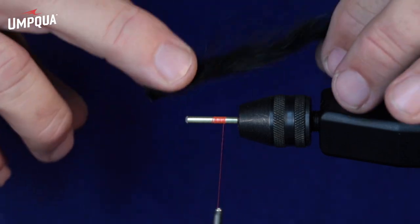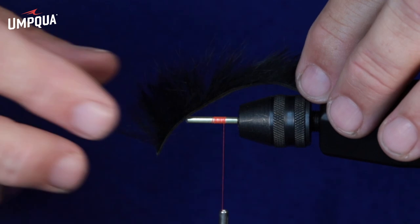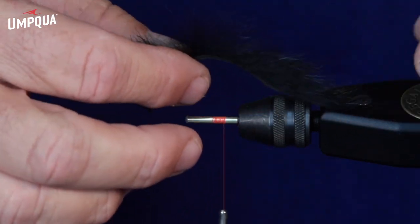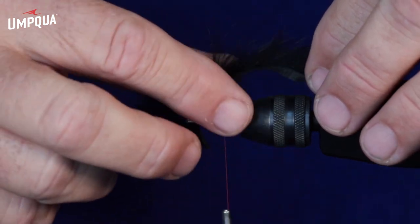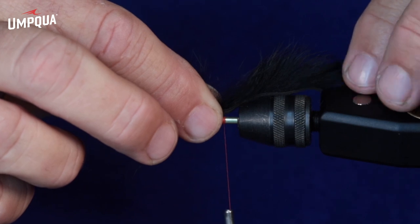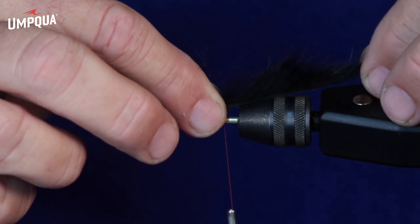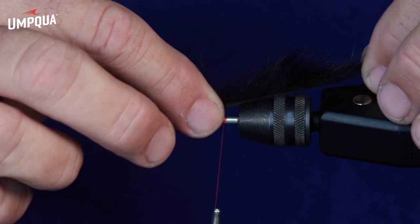And then we're going to add the tail. The tail is just rabbit strip. We want a little bit more than what you'd think you'd need because we're going to put our tail about that length right there, maybe an inch and a half, length and a half of the tube.